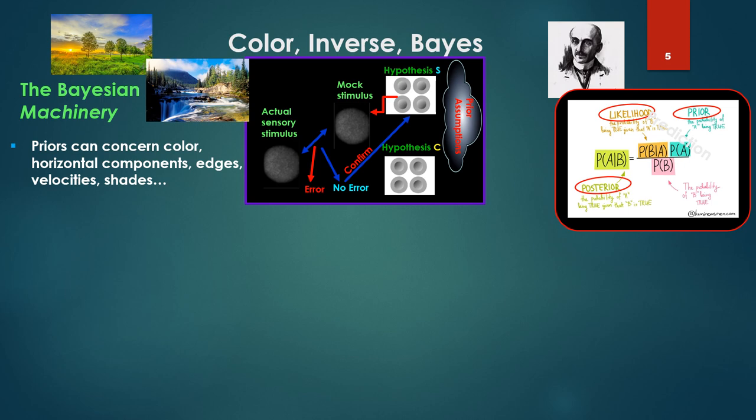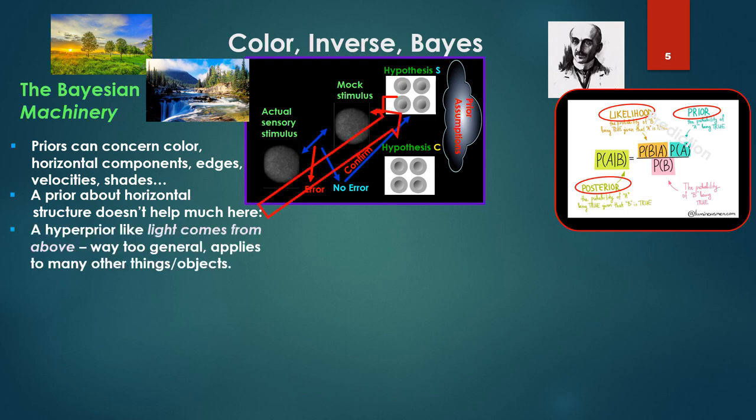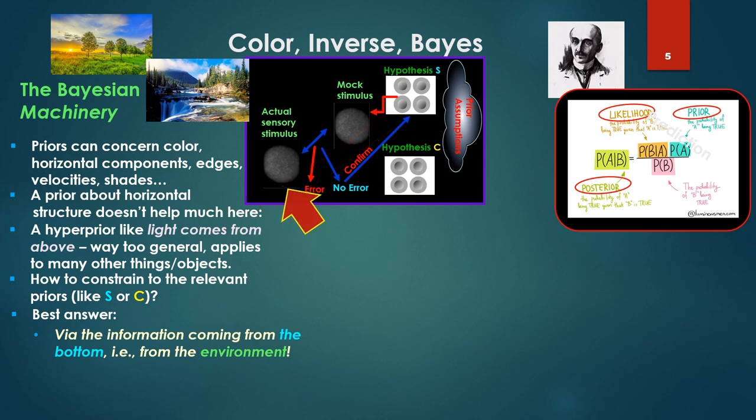Now priors can concern color, horizontal components in an image, edges, velocities, shades. A prior about horizontal structure doesn't help much here, talking domes and spheres. A hyperprior like light comes from above is way too general, applies to all kinds of other things, objects in those environments. So how to constrain to the relevant priors like S or C? Well the best answer, via the information coming from the bottom, that is from the environment itself.